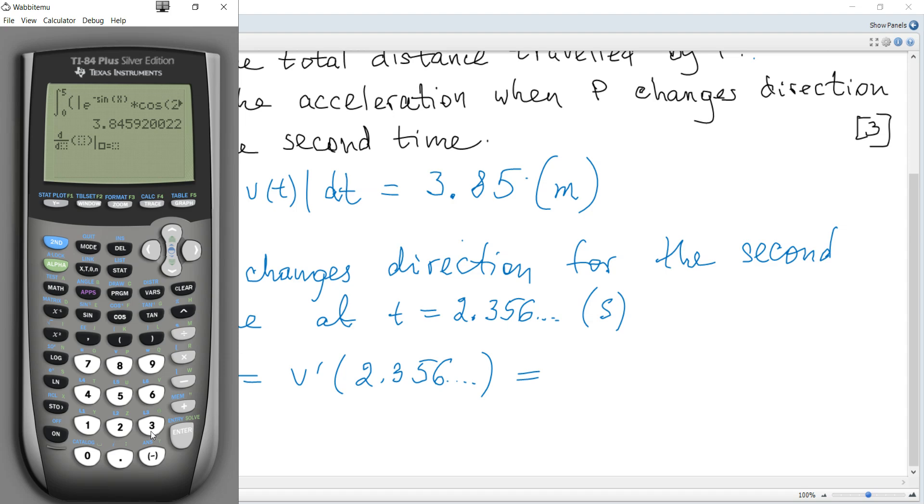d/dx of, again, this function—it's e to the power of negative sine t multiplied by cosine of 2t—and then t equals 2.356 and so on.